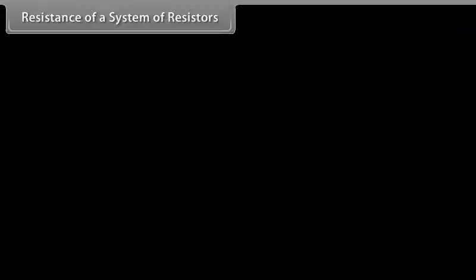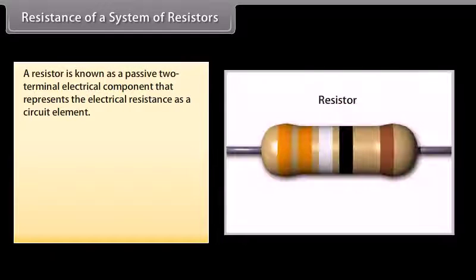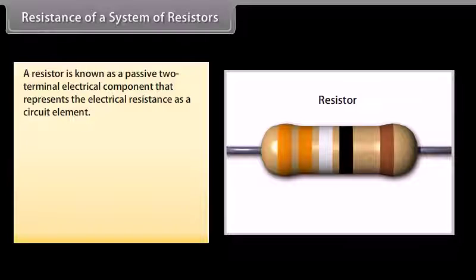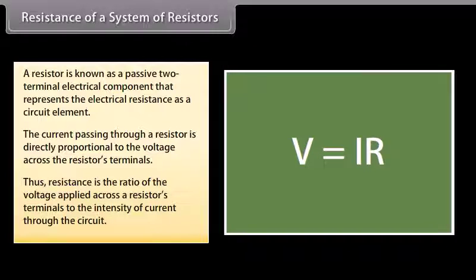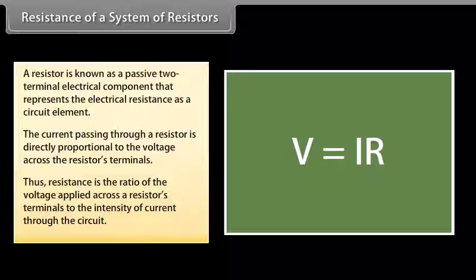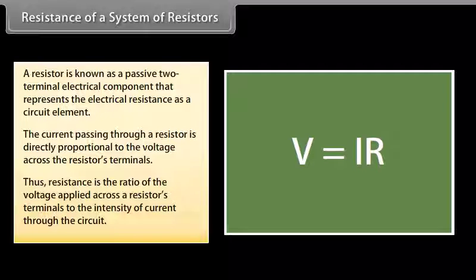A resistor is a passive two-terminal electrical component that represents electrical resistance as a circuit element. The current passing through a resistor is directly proportional to the voltage across the resistor's terminals. Thus, resistance is the ratio of the voltage applied across a resistor's terminals to the intensity of current through the circuit.